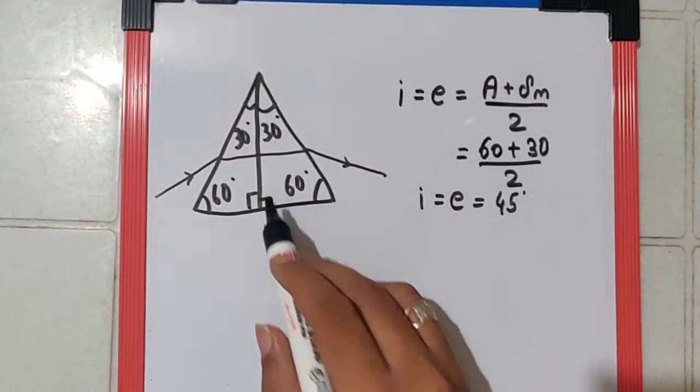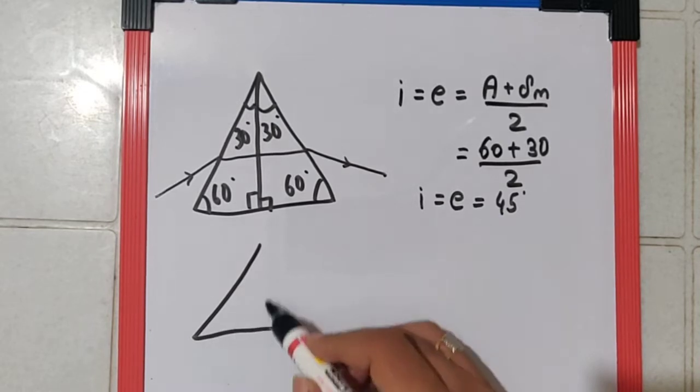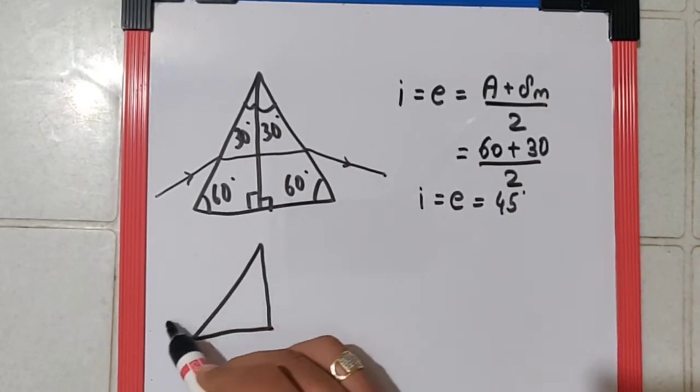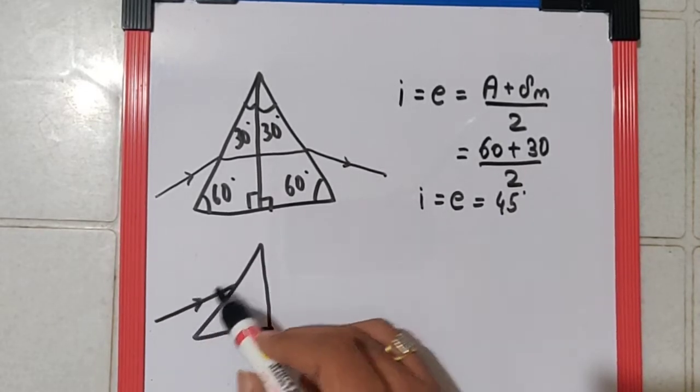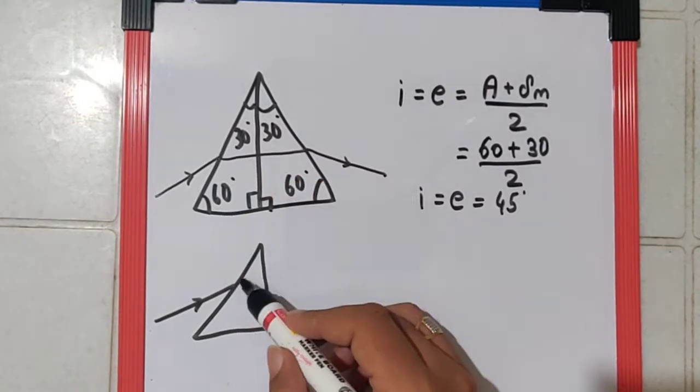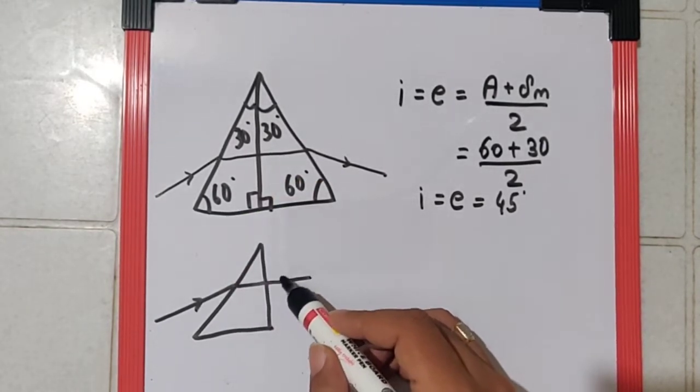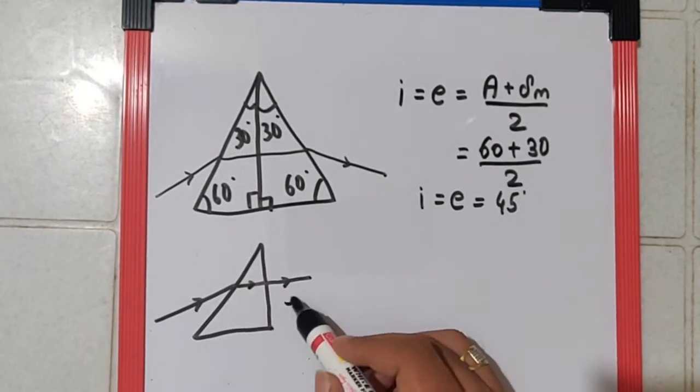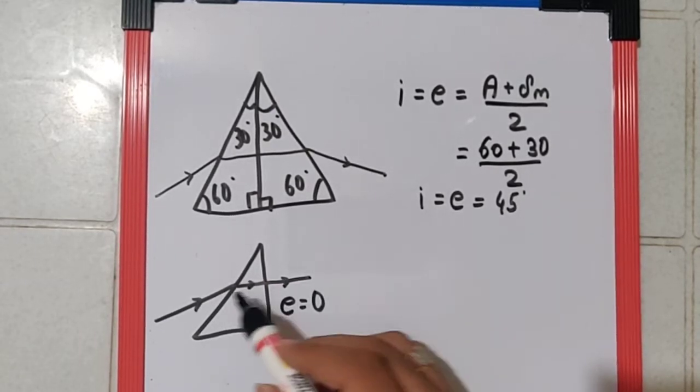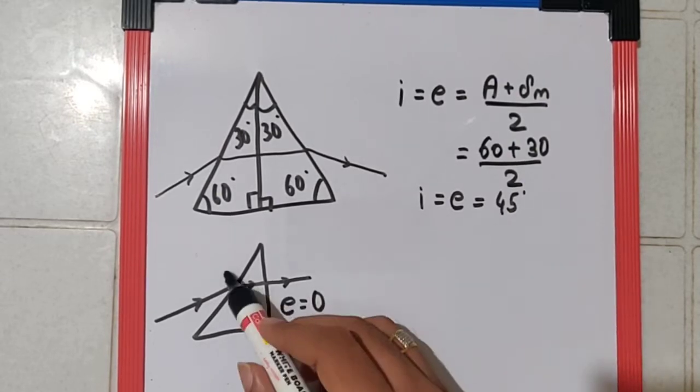Now if we remove this prism, so the diagram would just become like this. Now we need to understand that the angle of incidence will remain the same, but the angle of emergence will not. I can say in this case E becomes equal to 0, I remains the same as 45.